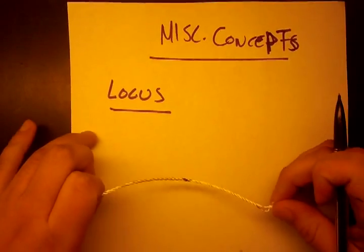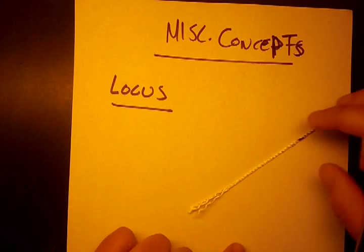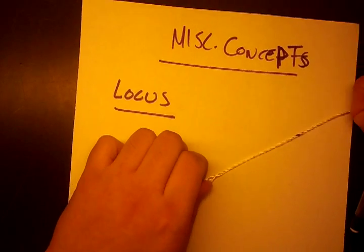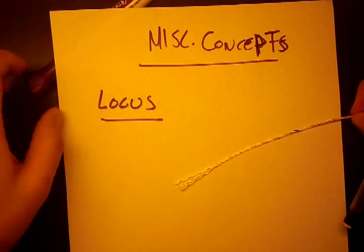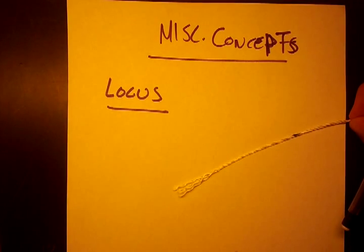In this video, I'll talk about miscellaneous concepts in geometry that we didn't have a chance to go over in the previous videos. So the first one I'm going to go over is locus. Locus is defined as the set of all points that share a common property.